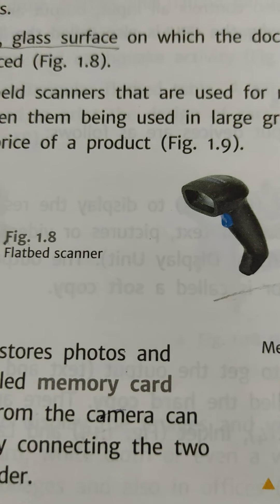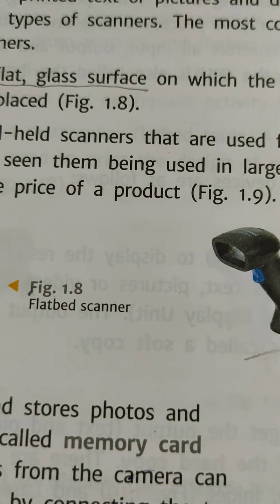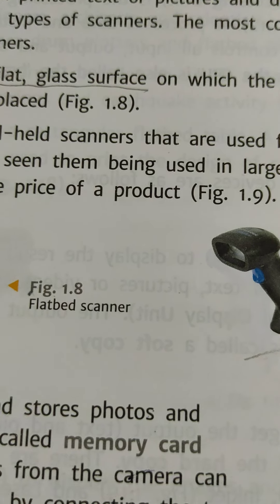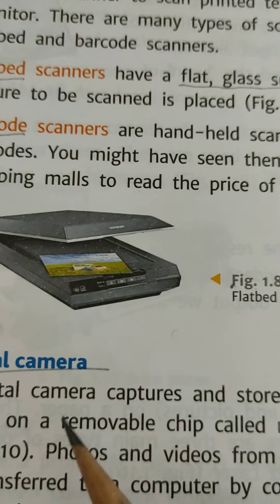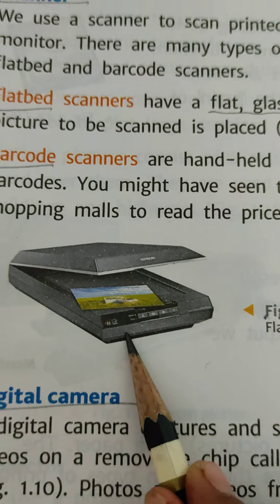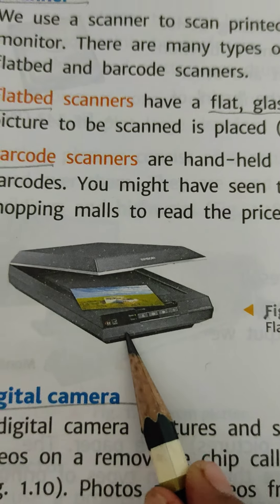Next is the barcode scanner. Barcode scanners are handheld scanners — we can hold them in the hand. They are used for reading printed barcodes. You might have seen them being used in large shopping malls and grocery stores for billing, to read the price of a product. This is the barcode scanner and this is the flatbed scanner — these are the two types of scanner.